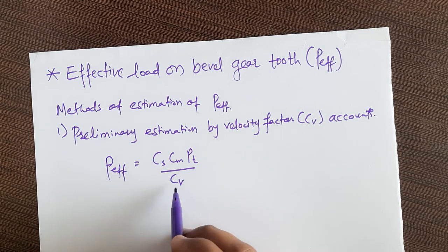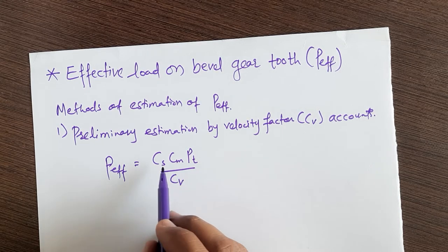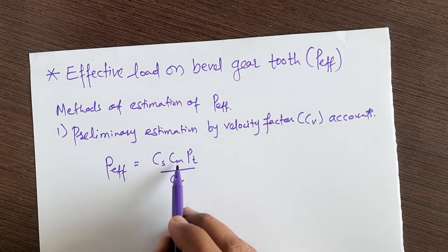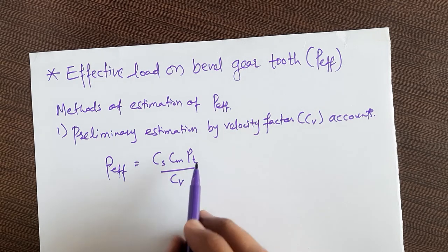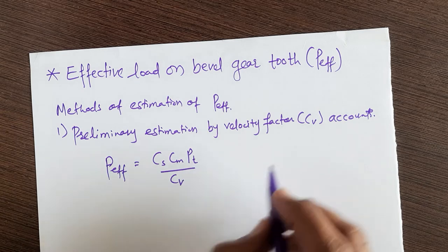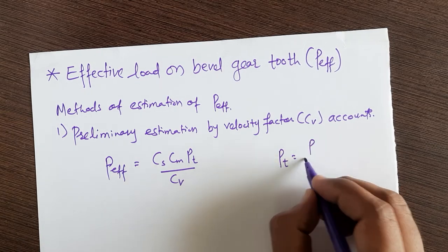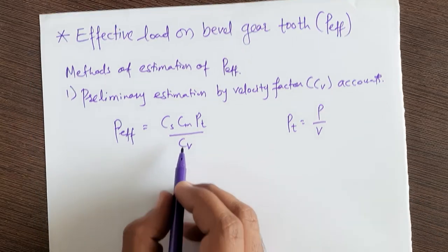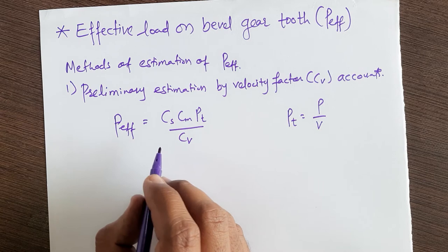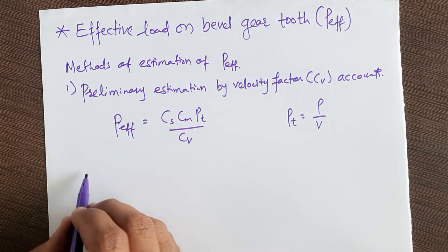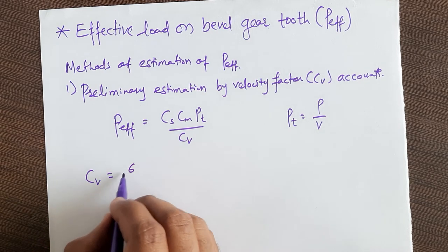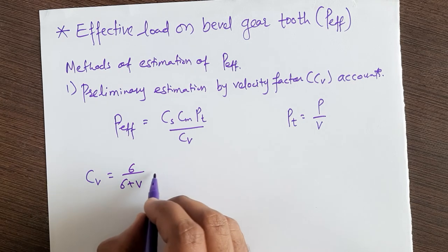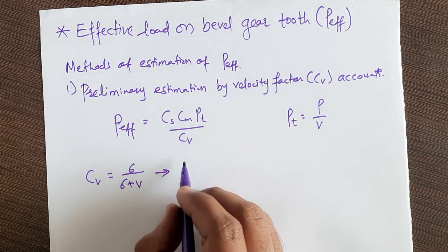In the formula P_eff = (CS × CM × PT) / CV: CS is the application factor, CM is the load distribution factor, PT is the tangential force, and CV is the velocity factor. The velocity factor depends on velocity. PT can be found from power divided by pitch line velocity. The velocity factor CV = 6 / (6 + V) for straight bevel gear manufactured by cutting.